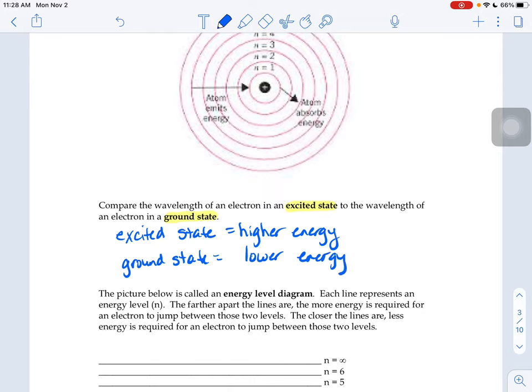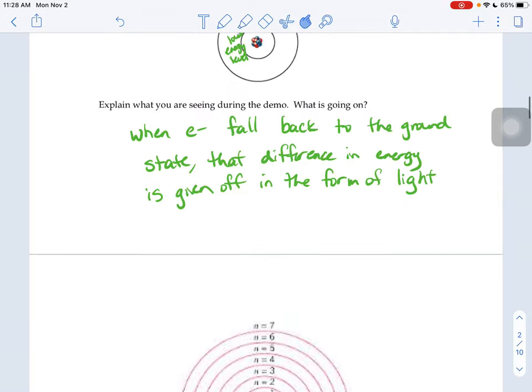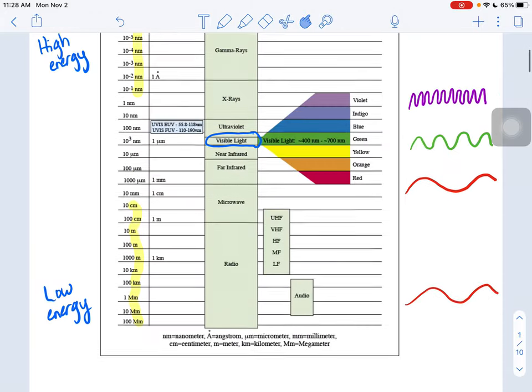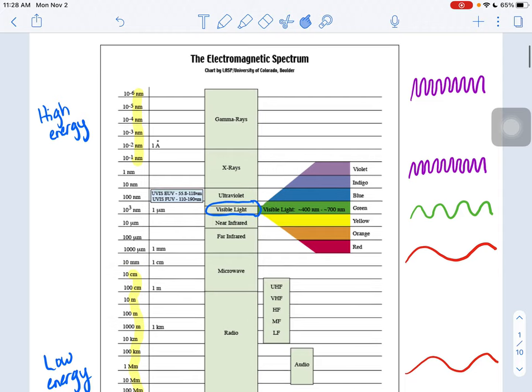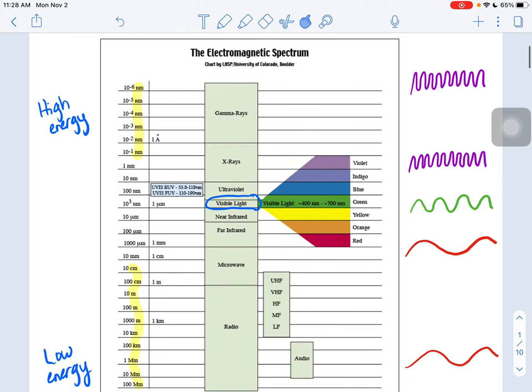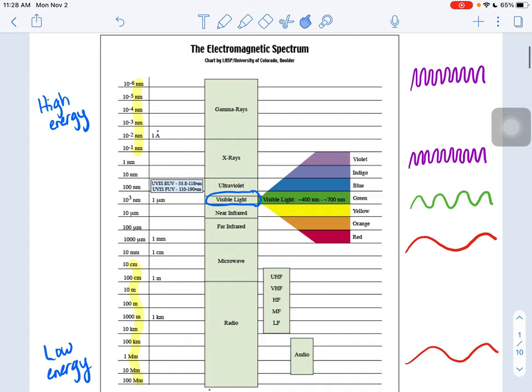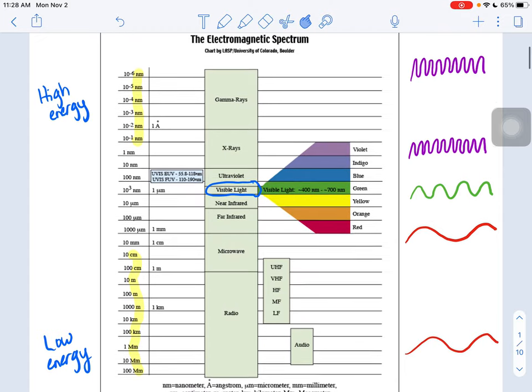But what does that have to do with wavelength and colors of light? Well, on the first page of our notes, if I scroll back here, we said that if you see purple light, you have very short wavelengths. When you see red light, you have very long wavelengths, relatively speaking.